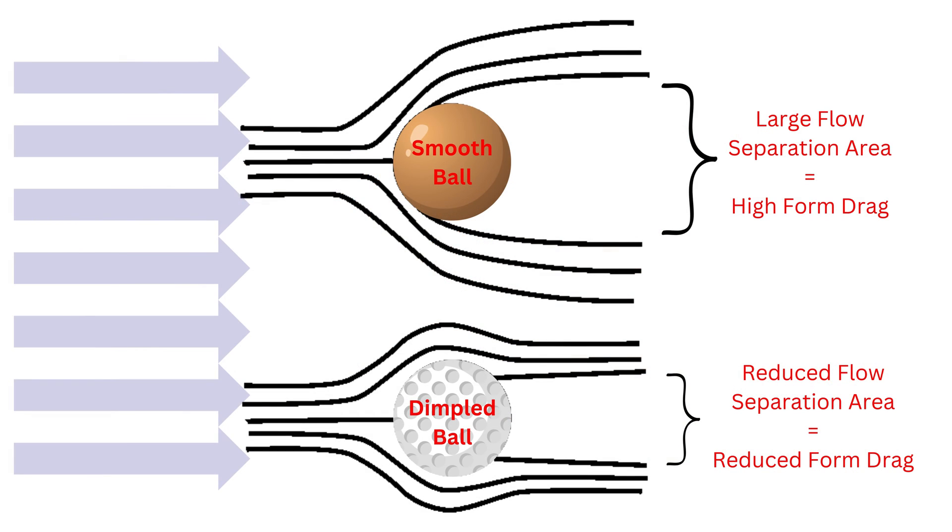However, there is also a benefit to turbulent flow. When flow is turbulent, it sticks more strongly to the surface, delaying flow separation. Therefore, although turbulence increases the skin friction drag, it can help reduce drag due to flow separation, which is called the pressure drag or form drag. For example, the dimples on a golf ball induce the flow to turn turbulent earlier, which increases the skin friction drag, but decreases the form drag by an even higher factor, thus reducing the overall drag of the ball.